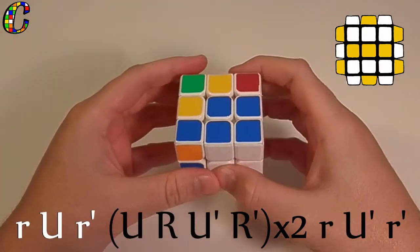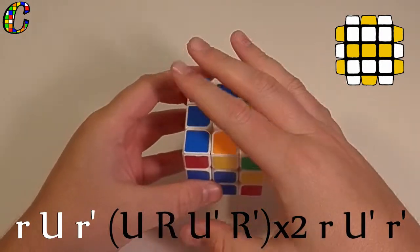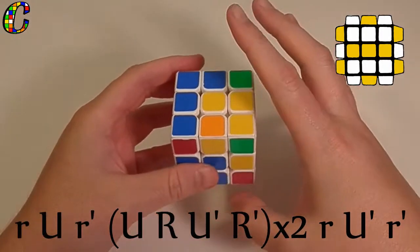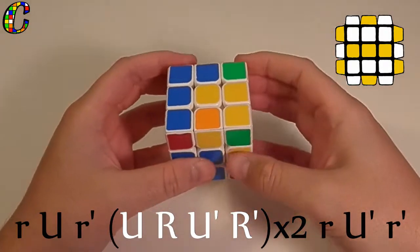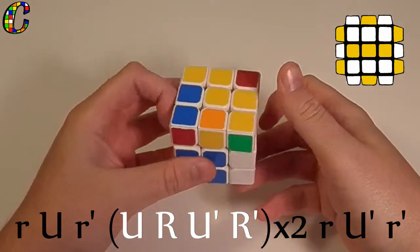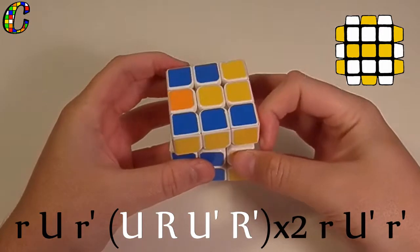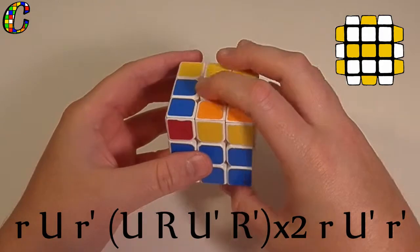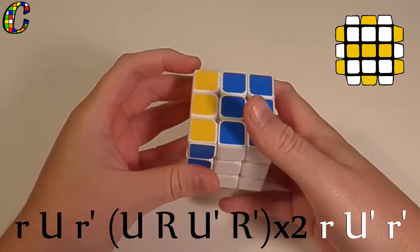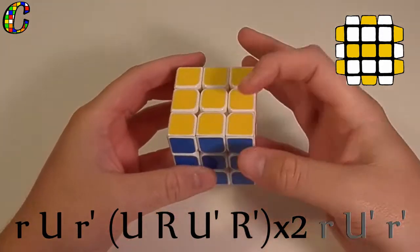Small r, u, small r prime, now that's your setup move, and in the middle you're going to do the reverse trigger, or reverse sexy move twice, u, r, u prime, r prime, u, r prime, and then you're going to undo your setup move. Small r, u prime, small r prime, and that will fix your case.